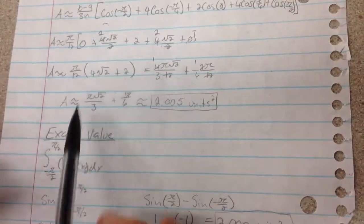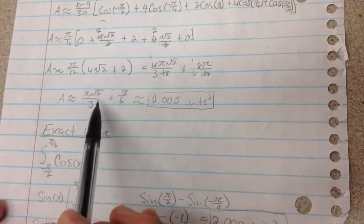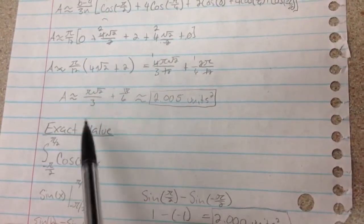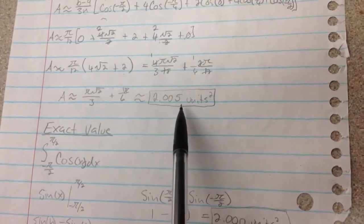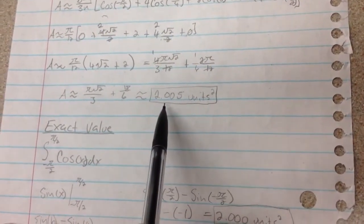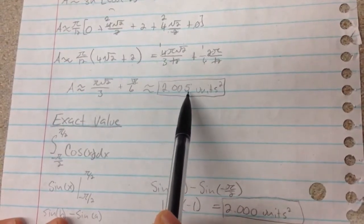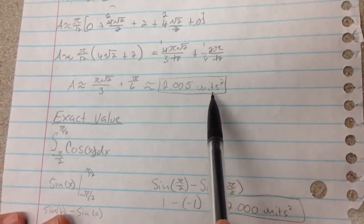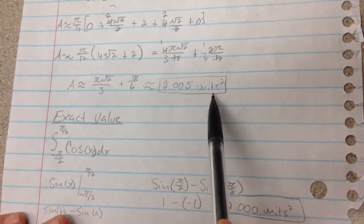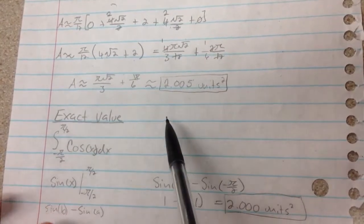You can go through and do all the extra steps to make sure they have the same denominator and everything. But considering we needed decimals, I just plugged it straight into the calculator. And the answer that it gave me is 2.005. And because it's area, you have to remember that it's going to be unit squared. So this is our Simpson approximation.